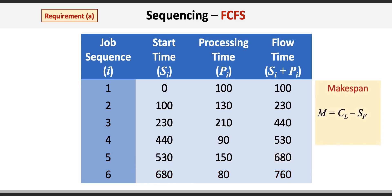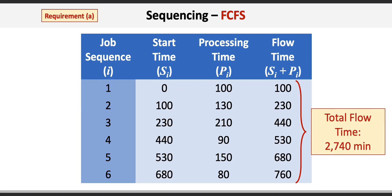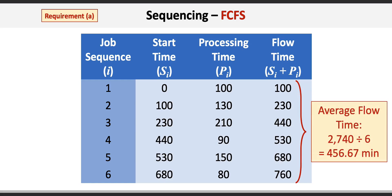The makespan — the time needed to process a given set of jobs — is calculated using the formula M = CL + SF, where CL is the completion time of the last job and SF is the start time of the first job. Here, CL is 760 minutes and SF is 0, so the makespan M equals 760 minutes. The total flow time is the sum of all flow times, which equals 2740 minutes, giving an average flow time of 456.67 minutes.